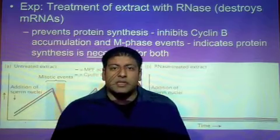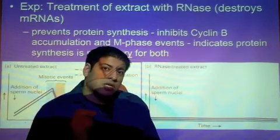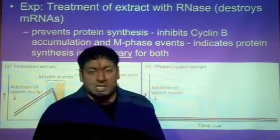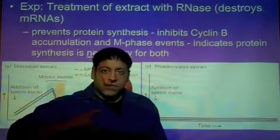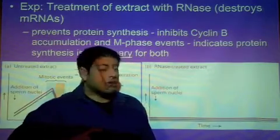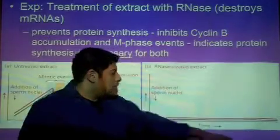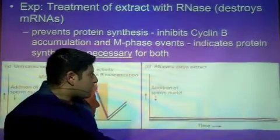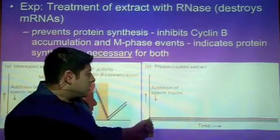If we introduce RNase, it's going to kill off the messenger RNA for cyclin B. When we go ahead and fertilize this egg cell that we have treated with RNase, what we see is a flat line. We add the sperm to stimulate mitosis and what we see with the RNase treated egg is nothing.